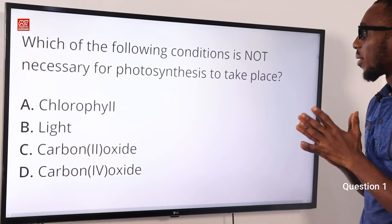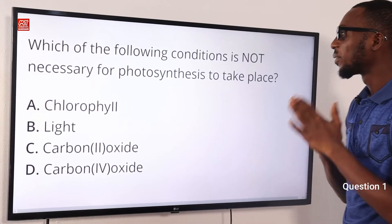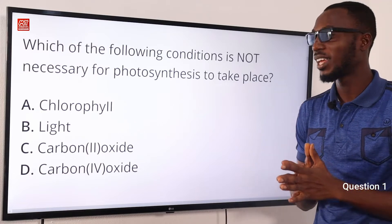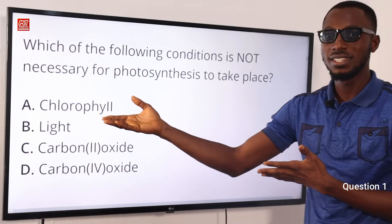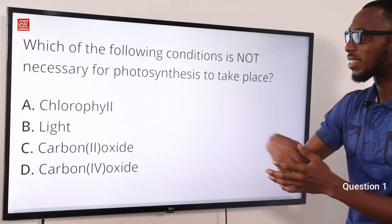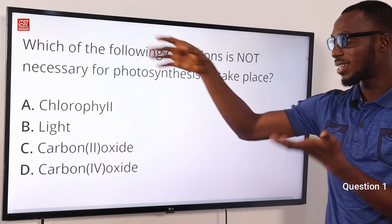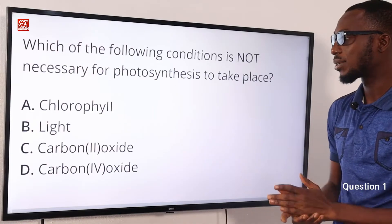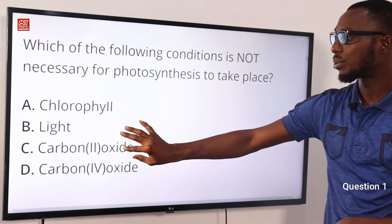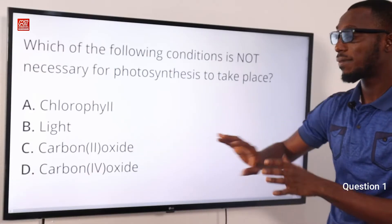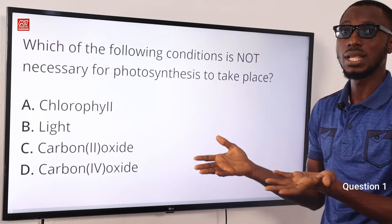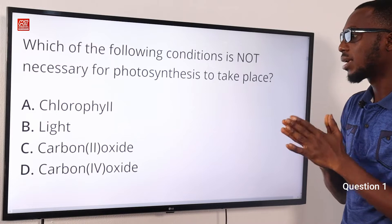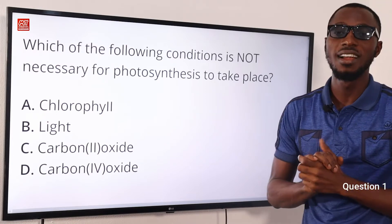Question 1: Which of the following conditions is not necessary for photosynthesis to take place? Photosynthesis is the process whereby green plants manufacture their food. The requirements are chlorophyll found in chloroplasts, sunlight as a source of energy, carbon dioxide, and water — and the process gives out oxygen. What is not needed is carbon monoxide. This is a poisonous gas produced from incomplete combustion of fuel. The correct option is C: carbon monoxide is not necessary for photosynthesis.